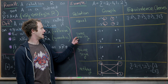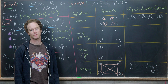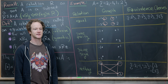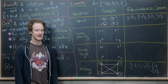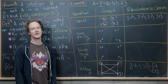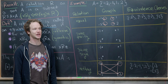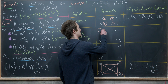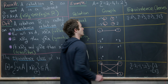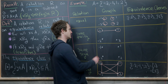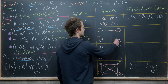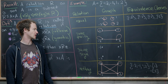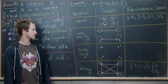Now we look at the parity equivalence relation, where parity means evenness or oddness. Two elements are related if they are of the same parity — both even or both odd. Negative one is related to itself, one is related to itself, and negative one and one are related to each other. Similarly, negative two is related to itself, two is related to itself, and two and negative two are related.